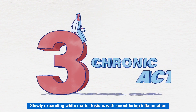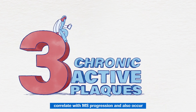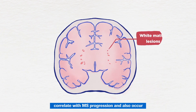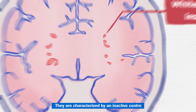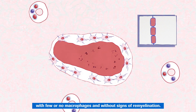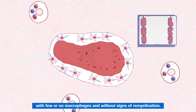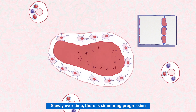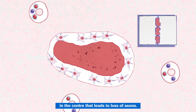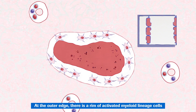Slowly expanding white matter lesions with smouldering inflammation correlate with MS progression and also occur behind a non-disrupted blood-brain barrier. They are characterised by an inactive centre with few or no macrophages and without signs of re-myelination. Slowly over time, there is simmering progression in the centre that leads to loss of axons.